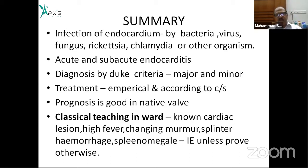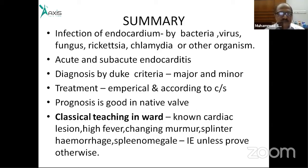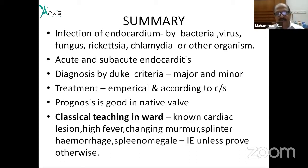Prognosis is better in native valve endocarditis and worse in prosthetic valve endocarditis, older age, and comorbid conditions such as diabetes, CKD, peripheral vascular disease, and ischemic stroke. The classical teaching: any patient with congenital or acquired cardiac lesion presenting with high fever, changing murmur, splinter hemorrhage, and splenomegaly — consider infective endocarditis unless proved otherwise.